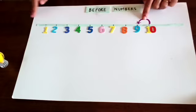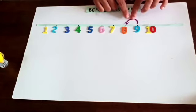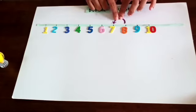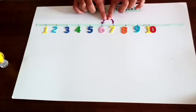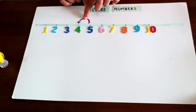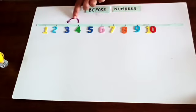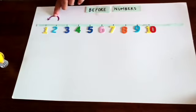We will revise all the numbers. Before 10, 9 comes. Before 9, 8 comes. Before 8, 7 comes. Before 7, 6 comes. Before 6, 5 comes. Before 5, 4 comes. Before 4, 3 comes. Before 3, 2 comes. And before 2, 1 comes.